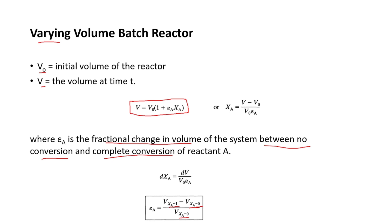Two things to note when solving batch reactor problems: you have to determine whether the species in the batch reactor is liquid or gaseous. If it is a liquid species, you can proceed with normal calculations. But if it is a gaseous species, you need to calculate εa.